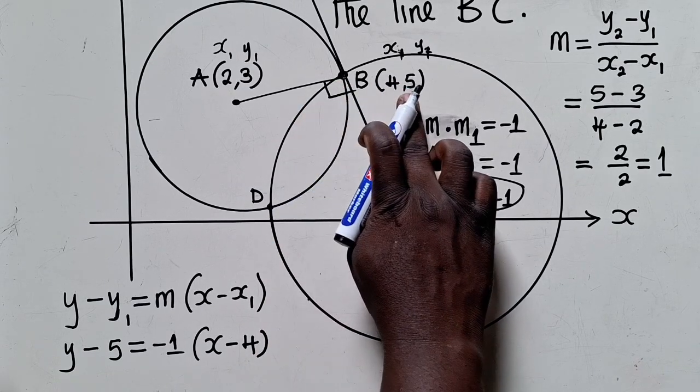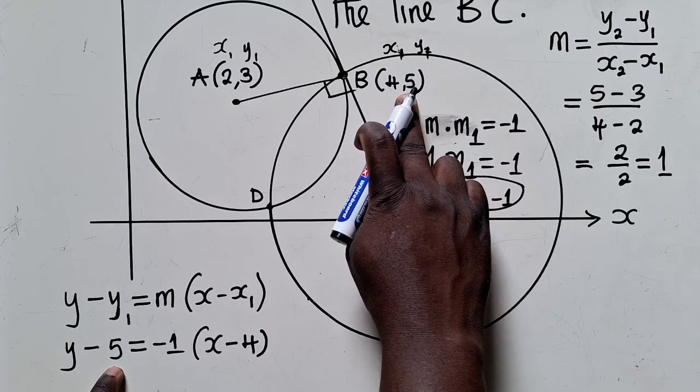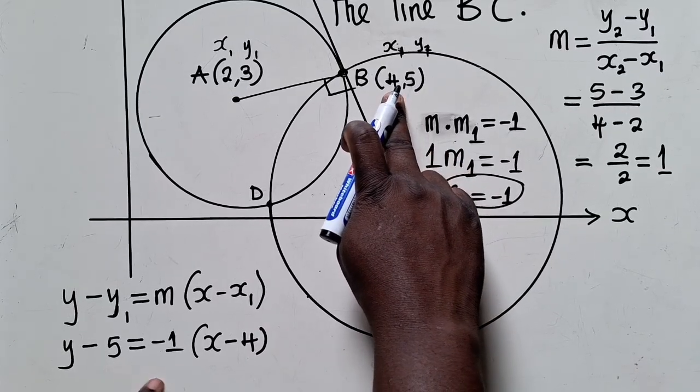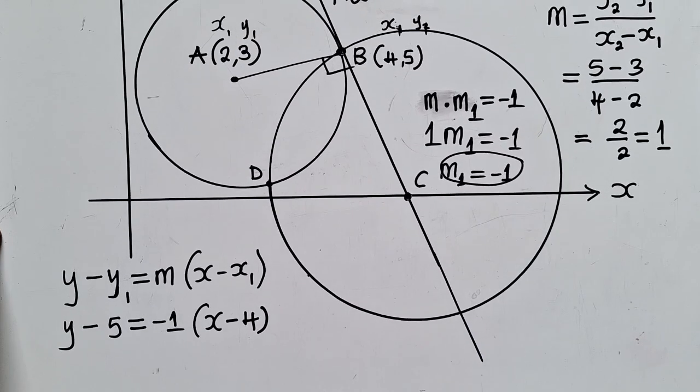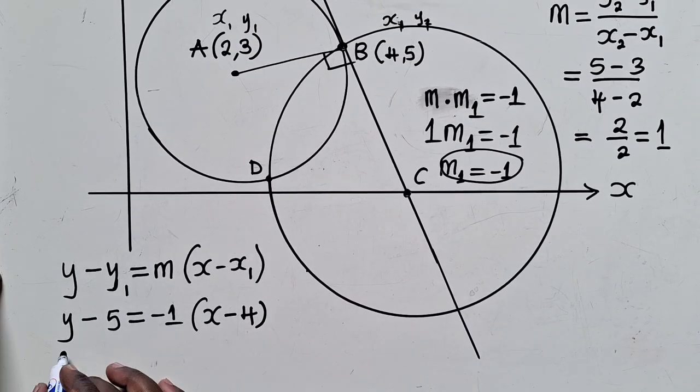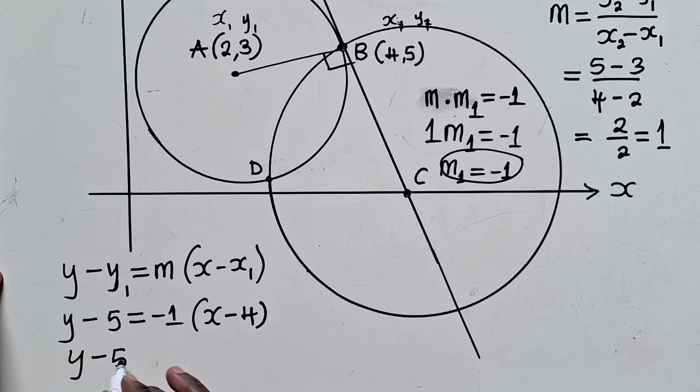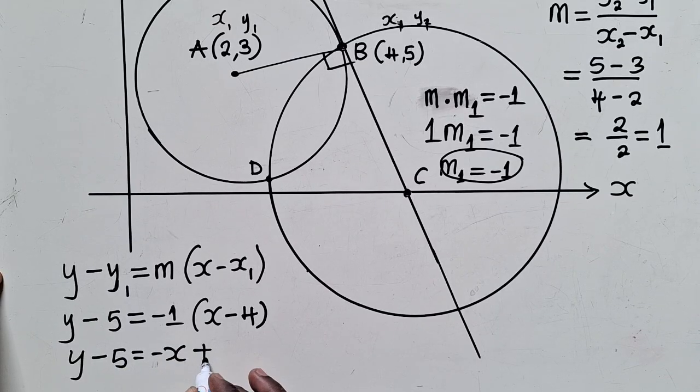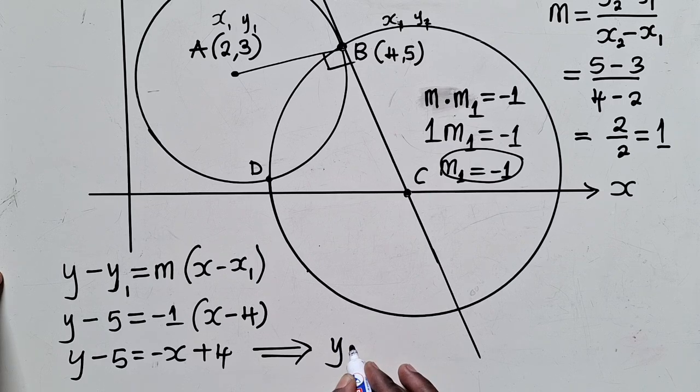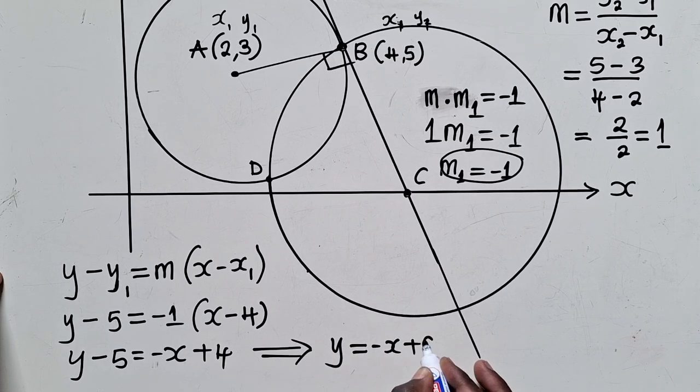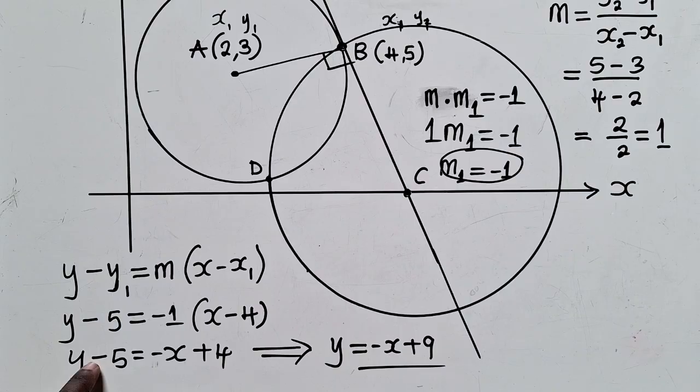I'm using this point. Y1 is 5, X1 is 4. So we simplify. This will give us Y minus 5 is equal to negative X plus 4. And when you simplify further, this will be Y is equal to negative X plus 9. When this minus 5 comes this side, it will be 4 plus 5, which gives us 9. This is the equation that we're talking about.